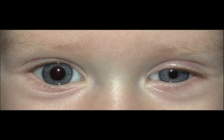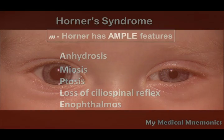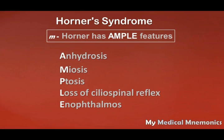There are symptoms like anhydrosis, miosis, ptosis, and enophthalmos in patients of Horner syndrome. To remember these symptoms, use the simple mnemonic AMPLE — you can easily remember that Horner syndrome has AMPLE features.